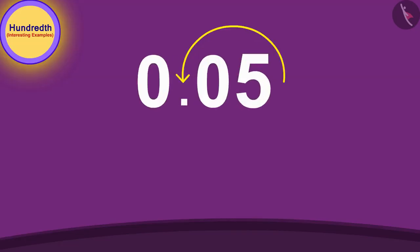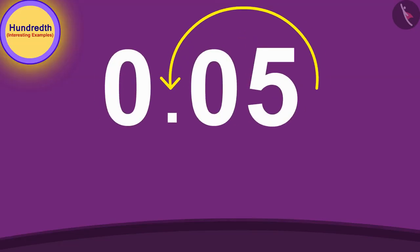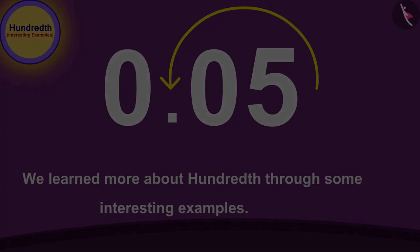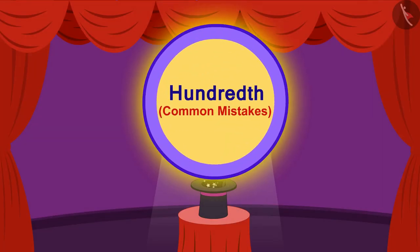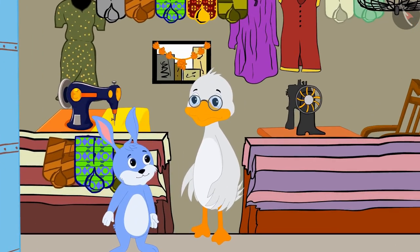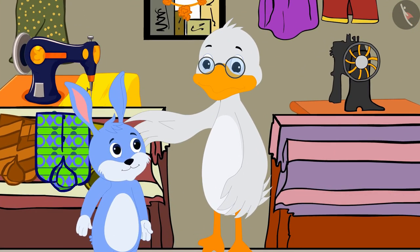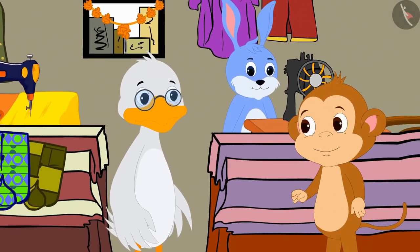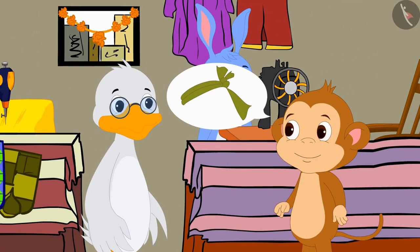Hello children. In the previous video we learned more about hundredths through some interesting examples. In this video we will see some of the misconceptions related to this. Bunny has come to help Uncle at his shop today. Babban has come to buy cloth for his scarf from Uncle.